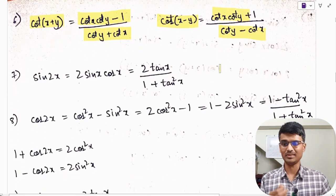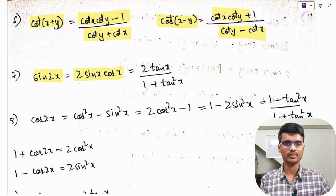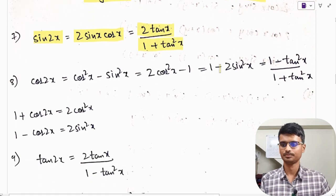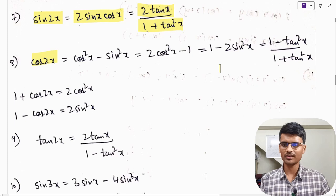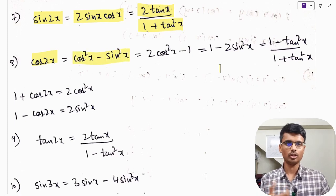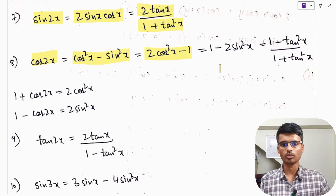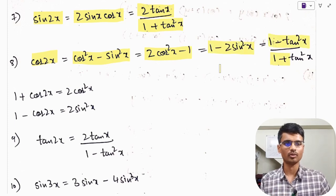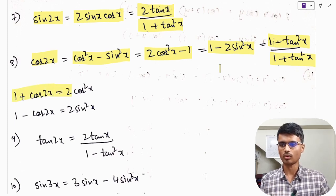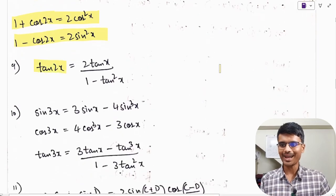Coming to double angle formulae — these are very important. Sin 2x = 2 sin x cos x; in terms of tan: sin 2x = 2 tan x / (1 + tan²x). Cos 2x = cos²x − sin²x = 2 cos²x − 1 = 1 − 2 sin²x; in terms of tan: cos 2x = (1 − tan²x) / (1 + tan²x). Also: 1 + cos 2x = 2 cos²x and 1 − cos 2x = 2 sin²x. Tan 2x = 2 tan x / (1 − tan²x).